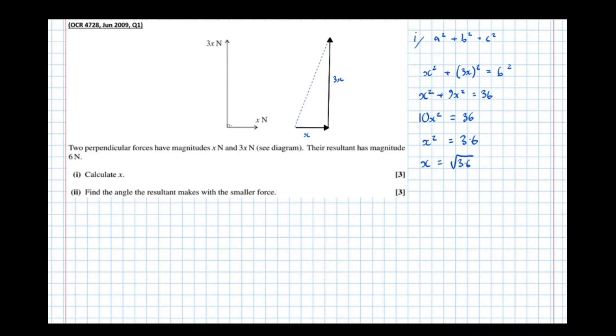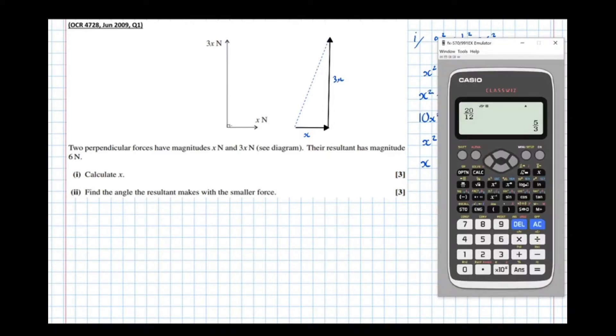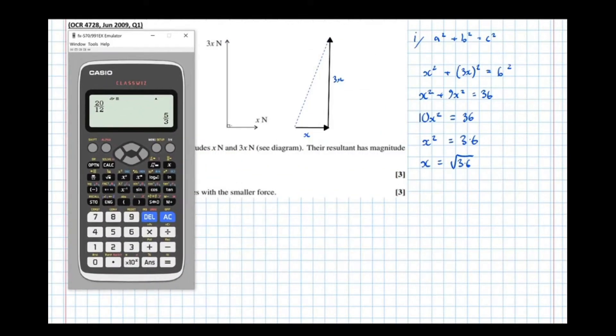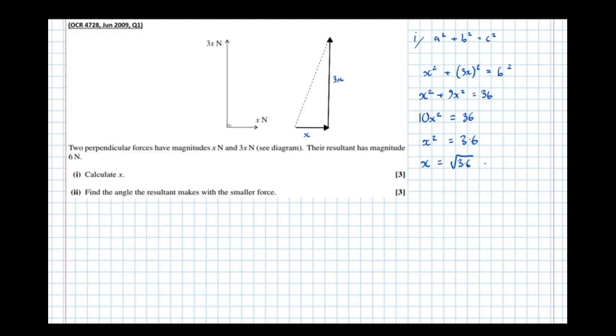Normally it would be plus or minus, but in this practical scenario, we know forces can only be, in this context, the magnitudes of forces can only be positive. The forces themselves can be acting in a negative direction, but the value of x has to be positive here because the direction is specified by the arrow. So root of 3.6, which is equal to 3 root 10 over 5 newtons.